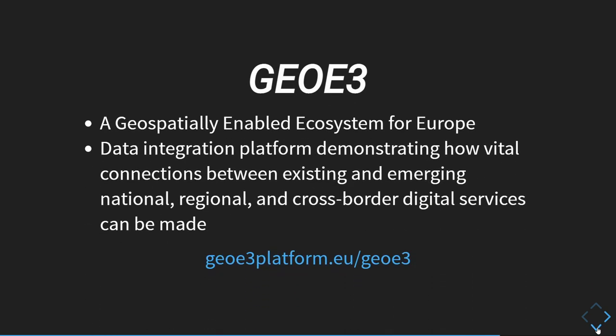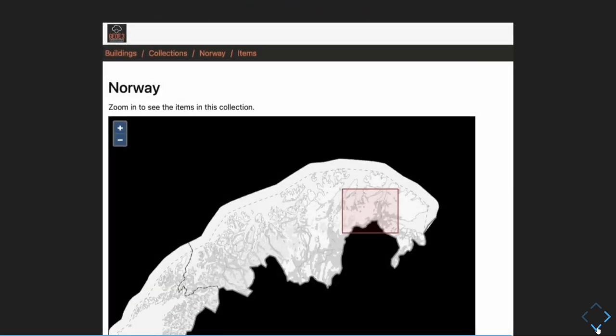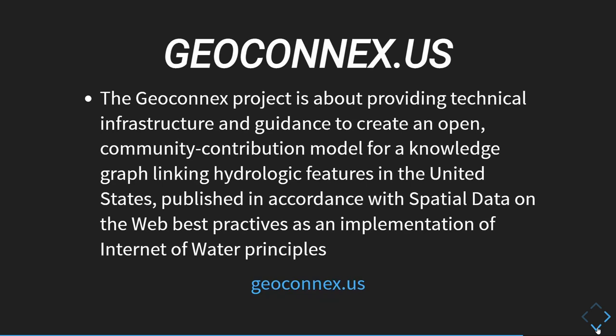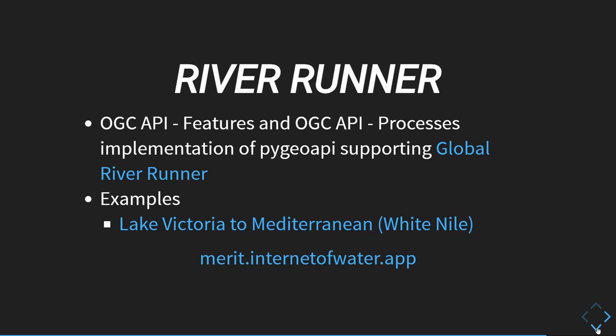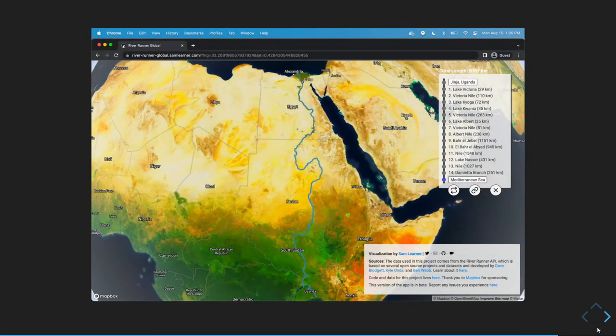GeoE3 is a geospatial-enabled ecosystem for Europe and they also deploy using PyGeo API. A lot of organizations are starting to use the project and make their data available through OGC API standards. Some of these projects also contribute back features, bug fixes, and so on. GeoConnects is obviously one of them as well. There's also something called River Runner — you click a point on the map, it sends a PyGeo API request, and the web application does an animation of how the river flows, from anywhere in the world. It's an absolutely fantastic use of PyGeo API for real processing.